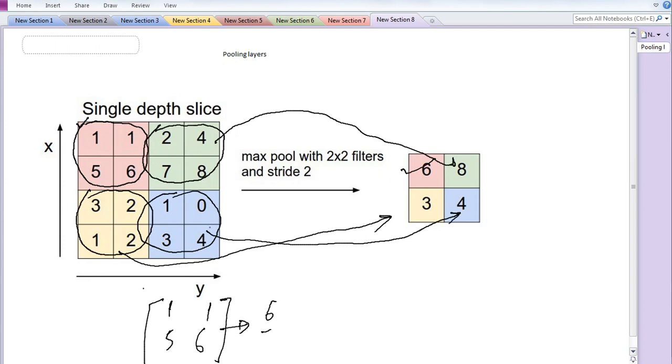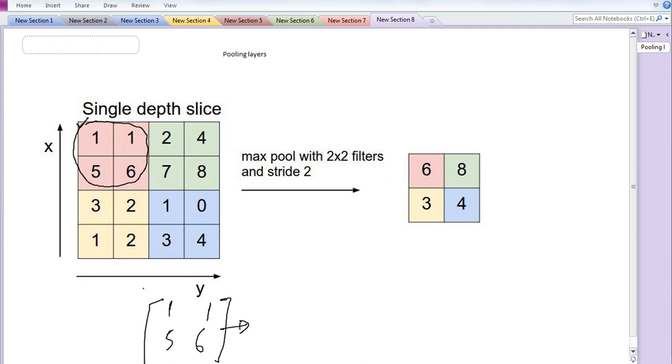Now, if we take a 2x2 filter with stride 1, then in the first case we will take [1, 1, 5, 1, 6] and the maximum value will be coming as 6.